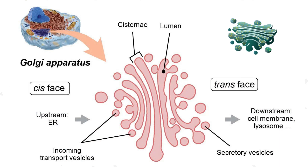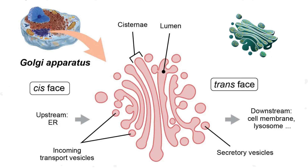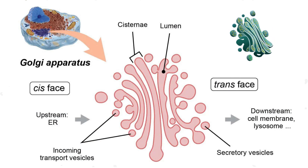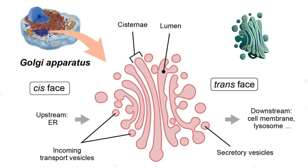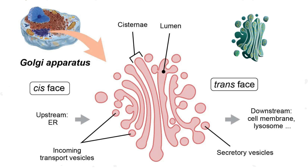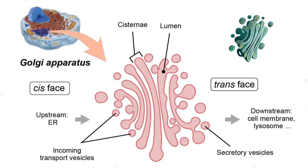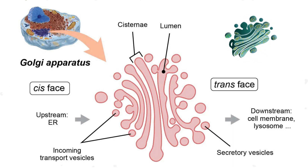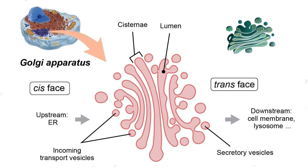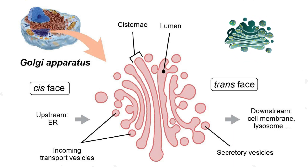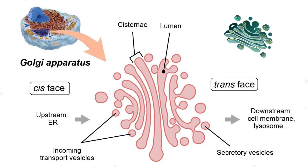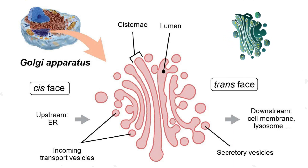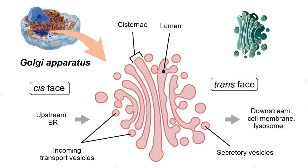The Golgi apparatus is characterized by stacked, flattened sacs known as cisternae, arranged in layers. Vesicles — small membrane-bound sacs — facilitate material transport within and outside the Golgi.